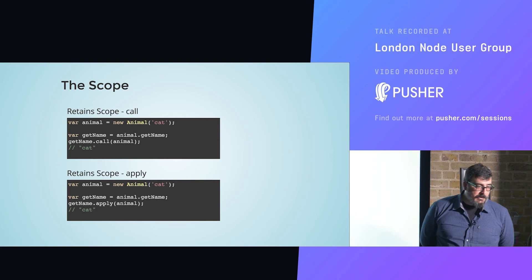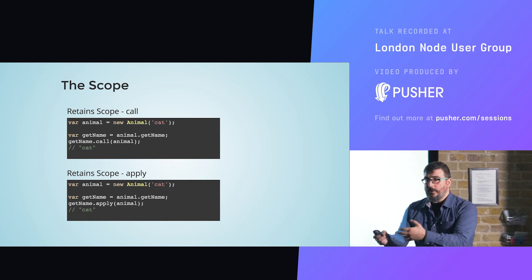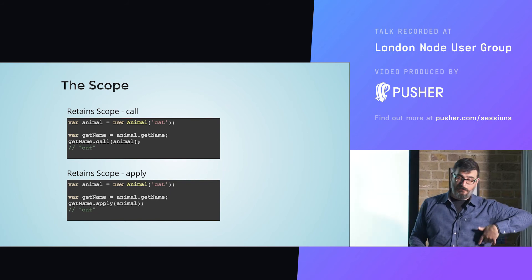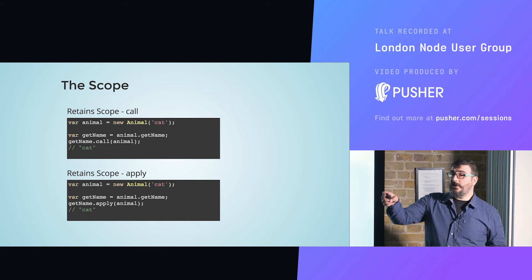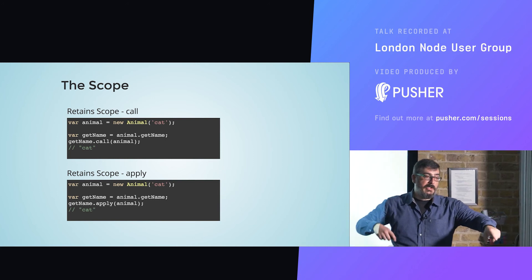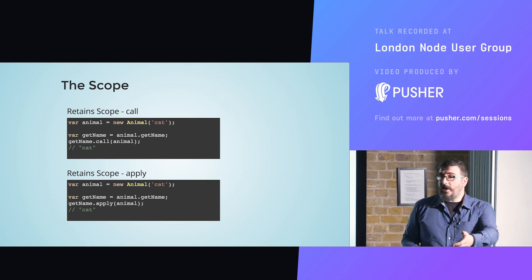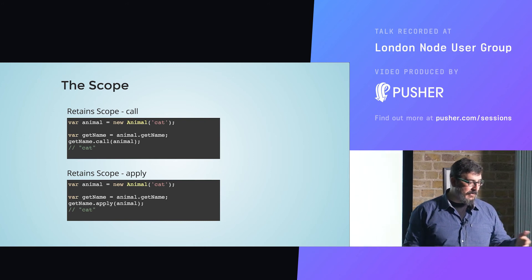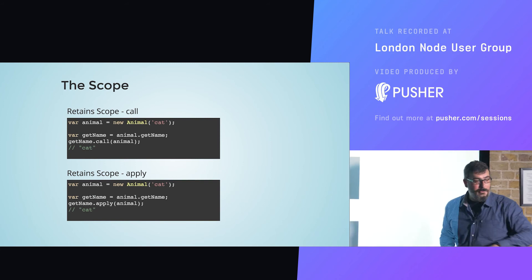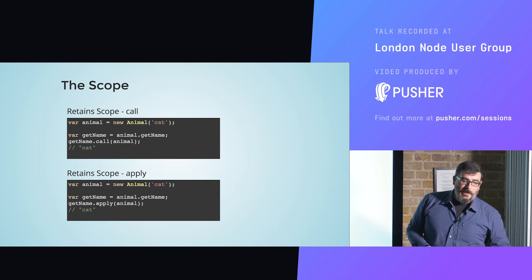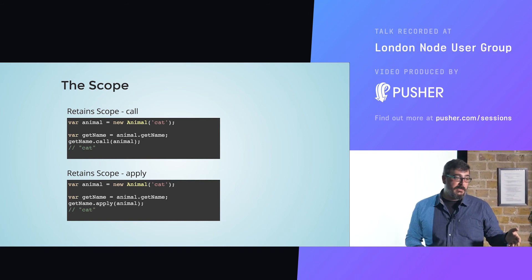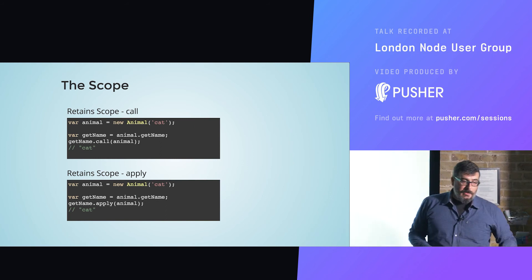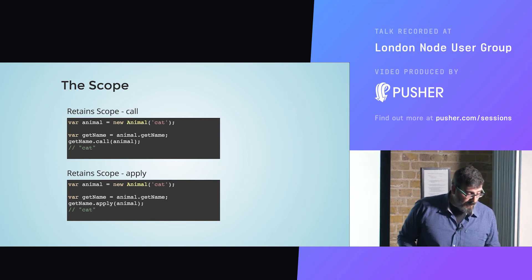We are playing with the .call() and .apply() methods. .call() invokes the method getName — getName now doesn't have a scope because we abolished it — but we say we need it invoked with the context of animal, and it returns 'cat'. We could further hack that by creating another instance with name 'dog' and mixing the two together. .call() and .apply() have the same effect — their only difference is in the arguments. With .call() you assign arguments serially; .apply() expects arguments as an array.